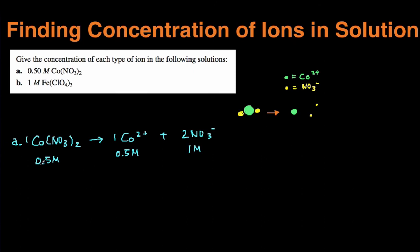The other way to do it's much easier. You just take the concentration of the compound and multiply it by the coefficient of the ion. So for cobalt, we see there's only one cobalt. So we do 1 and then multiply it by the concentration of the solution, which is 0.5, and then that's going to give us 0.5 molar.